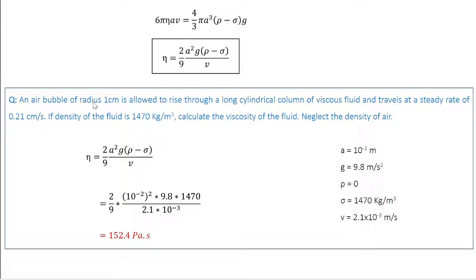As a quick problem, an air bubble of radius 1 cm is allowed to rise through a long cylindrical column of viscous fluid and travels at a steady rate of 0.21 cm per second. If density of the fluid is 1,470 kg per meter cube, calculate viscosity of the fluid, neglecting the density of air. Write down the equation, then write down all parameters in SI unit. Substitute all the parameters in the equation, you get 152.4 pascal second. You have to remember the SI unit correctly.